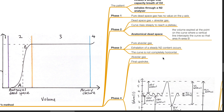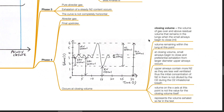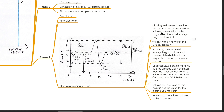The curve in Phase 3 is not completely horizontal. Phase 4 consists of pure alveolar gas with a final upstroke, occurring at closing volume. Closing volume is the volume of gas over and above residual volume that remains in the lungs when the small airways begin to close. At closing volume, small airways begin to close and preferential exhalation from large diameter upper airways occurs. Upper airways contain more nitrogen as they are less well ventilated, so the initial nitrogen concentration is not diluted by the oxygen inhalation breath. The volume on the x-axis at this point represents the volume exhaled so far in the test, not the closing volume itself.